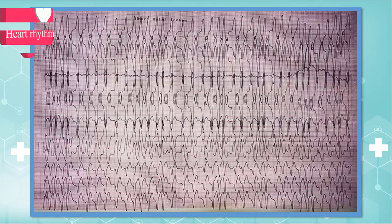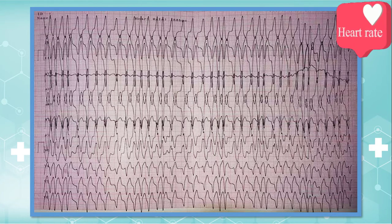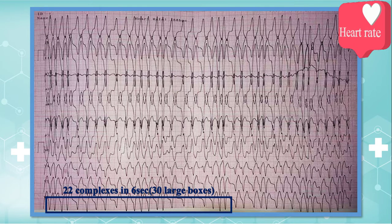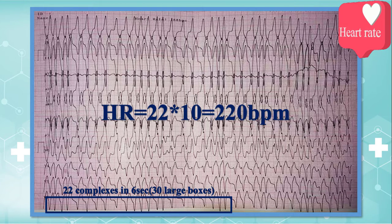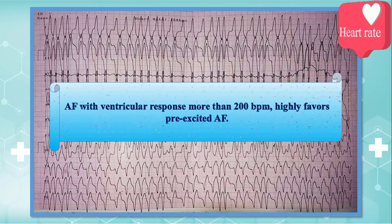The third step is heart rate. There are 22 QRS complexes within 30 large boxes, so the heart rate is about 220 beats per minute, which is extremely fast. Remember that atrial fibrillation with a ventricular response more than 200 beats per minute highly favors pre-excited AF.